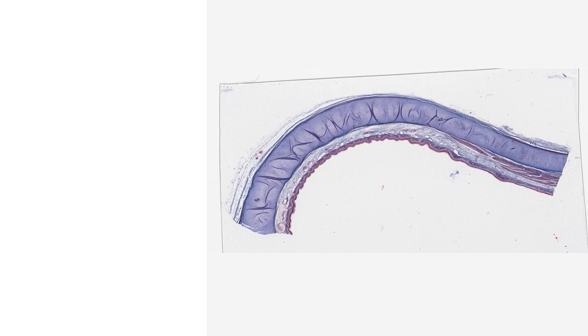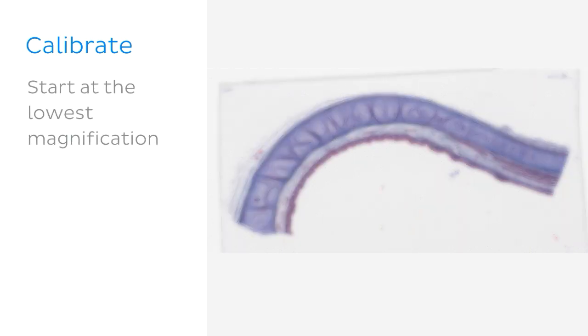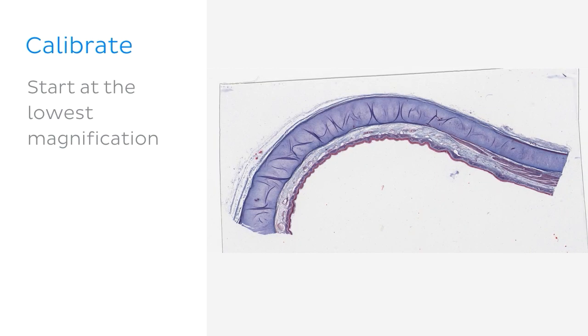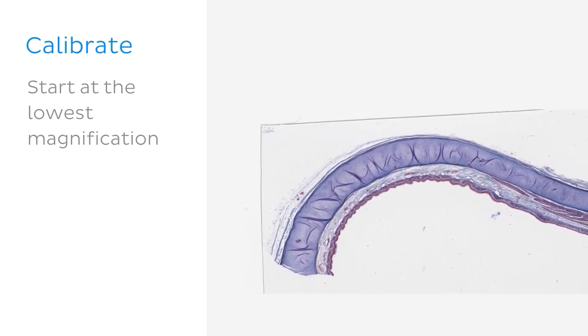Next, go ahead and place your slide under the microscope and calibrate the microscope so that your image is in focus and not fuzzy. Start at the lowest magnification and move the slide around to see the entire surface since the slide is always bigger than the lens.